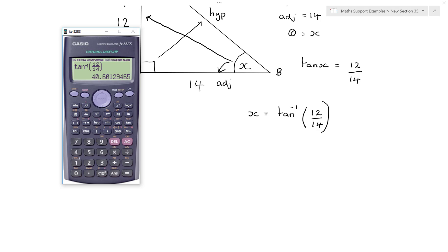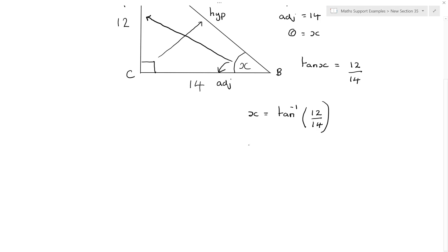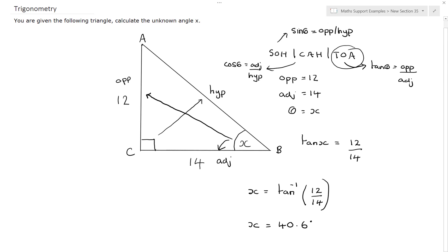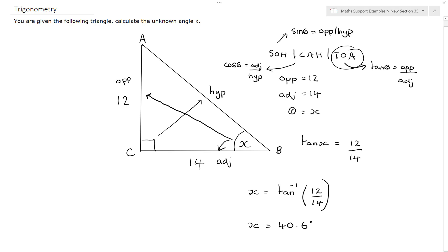40.6. So we can see that x is equal to 40.6 degrees. I have therefore used trigonometry to find the missing angle. In this case, it was 40.6 degrees.